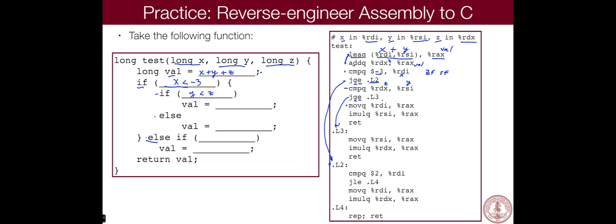All right. RDI is X and RAX is val. So we are moving RDI into val. Like this, X. And let's see if something else is happening.